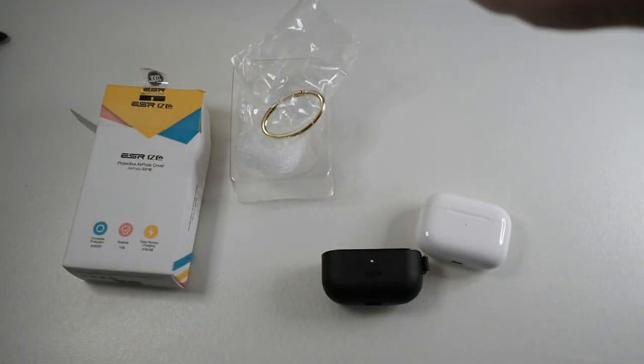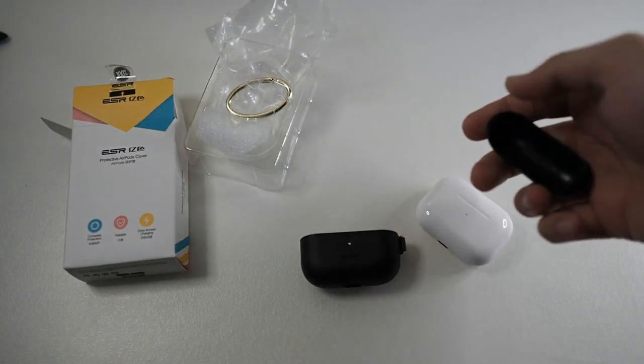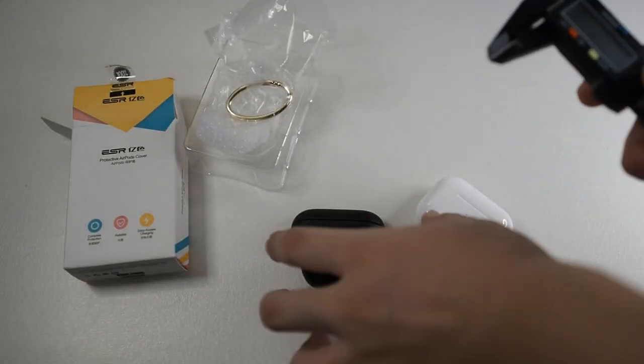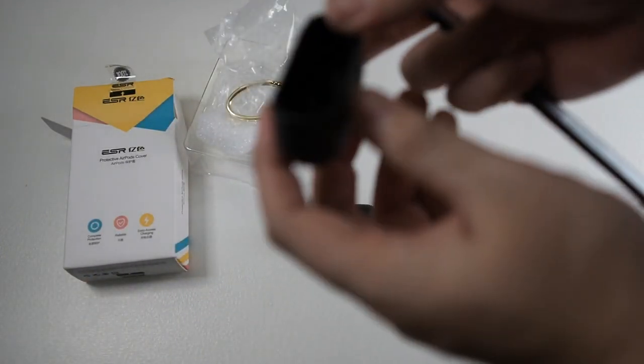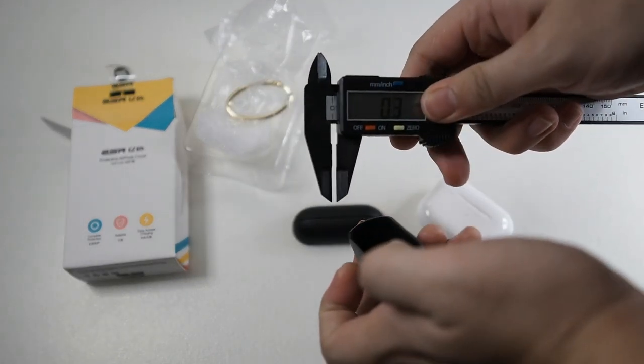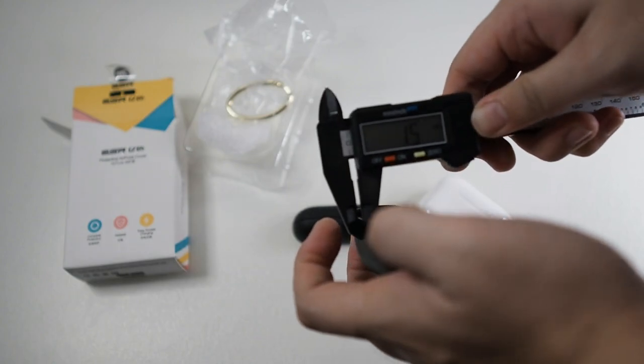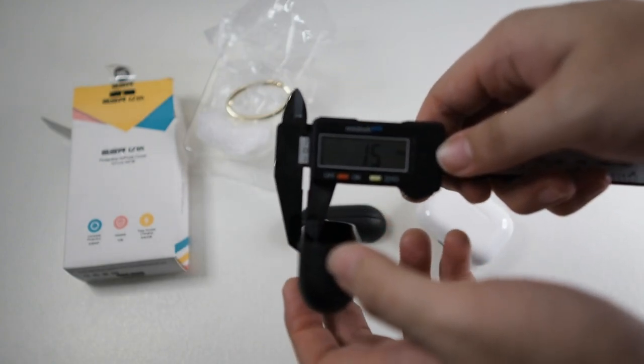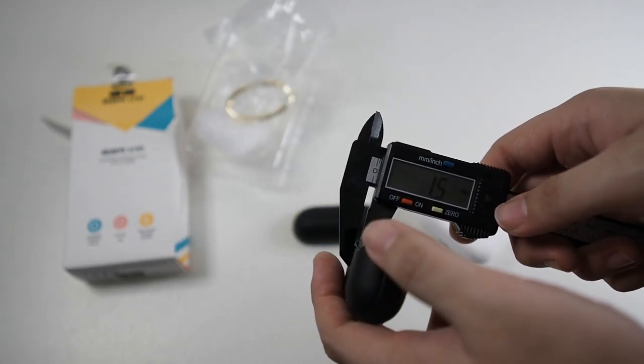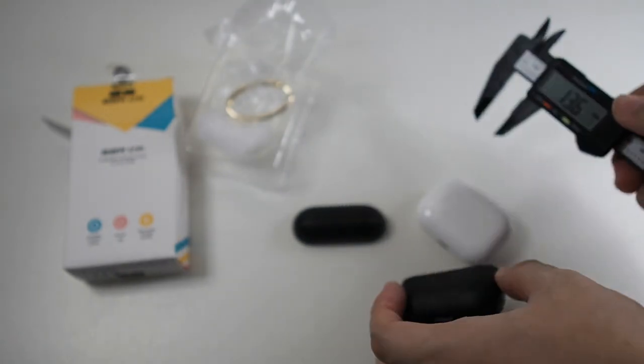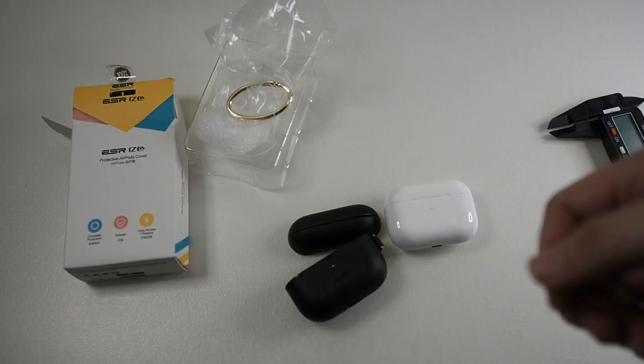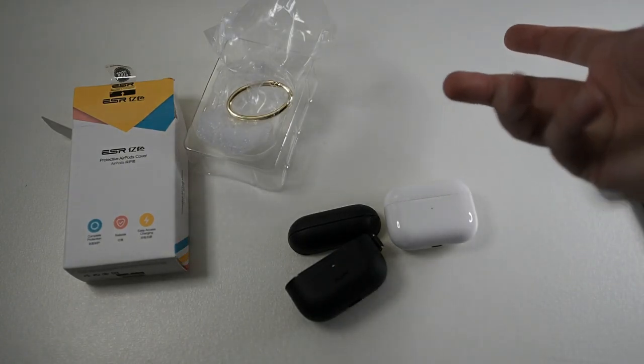Let's take a look at this case and measure the dimensions. I have my measuring calipers here. Let me turn it on. You can see the thickness of the case is actually very slim at 1.5 millimeters, which is pretty good. I mean, you want to keep your AirPods slim so you can put it in your pocket. That means you won't be getting that much drop protection - it's mostly knock and scratch protection.